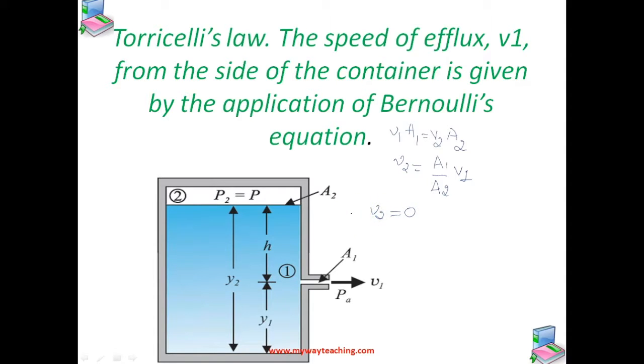Now applying Bernoulli's equation at points 1 and 2, noting that at the hole p1 equals pa, the atmospheric pressure. We get pa plus 1/2 rho v1 squared plus rho g y1 equals p plus rho g y2. Taking y2 minus y1 equals h, we get v1 equals square root of 2gh plus 2 times p minus pa by rho.